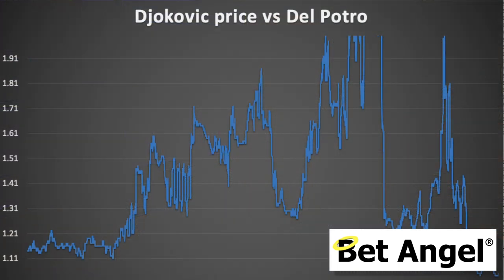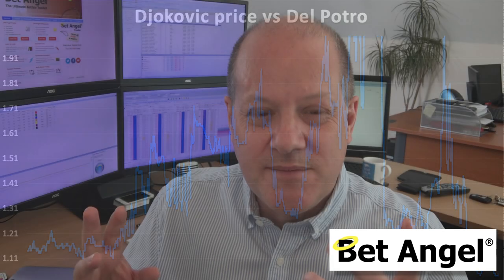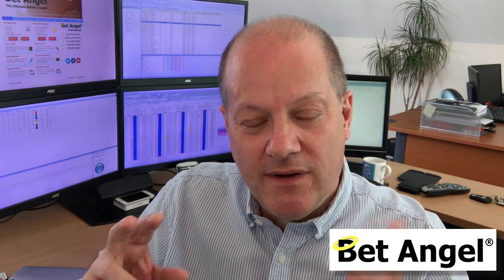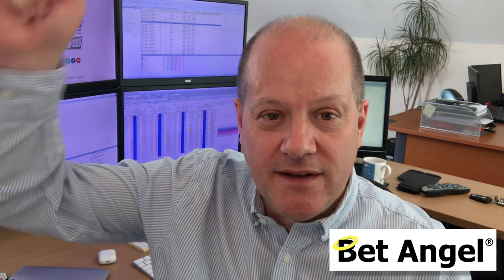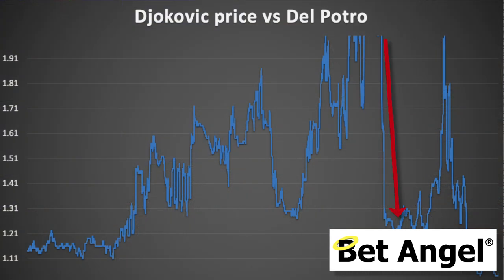The odds drifted out when it looked like Djokovic was in trouble, then he pulled it around in the second set. He was 5-2 up at one point, but Del Potro came storming back and took it to a tiebreak, so you can see the odds go flying out again. On Djokovic those were probably 9 or 10 at that point with Del Potro looking like he was about to win the second set. But Djokovic did win the second set and the odds came crashing back in again. There was a bit of a tussle in the third set, but eventually he turned it around.